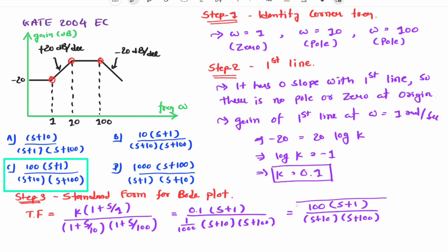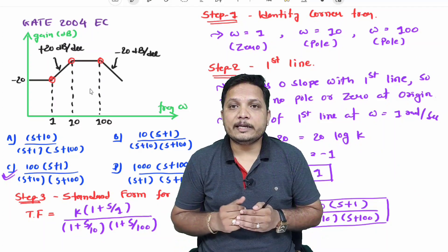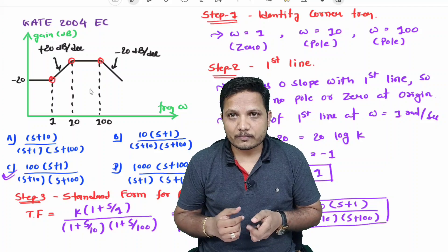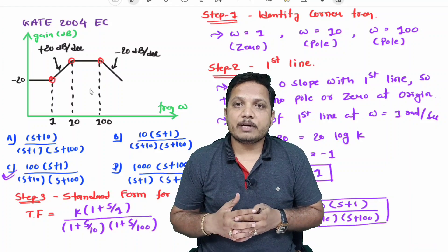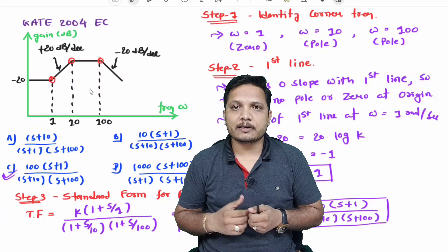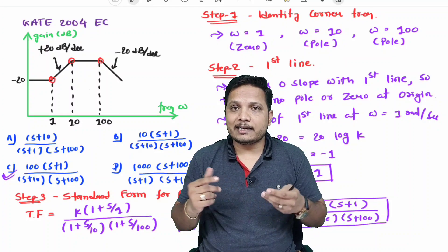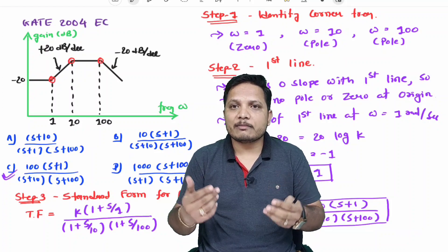This is our answer — that is the transfer function, and among the options A, B, C, D, this is the correct option. We have identified the transfer function for the given system. These are the basic steps to solve for the transfer function based on the gain plot of a Bode plot. Thank you so much for watching this video; please give your valuable suggestions, which motivate me to make more videos in the future.